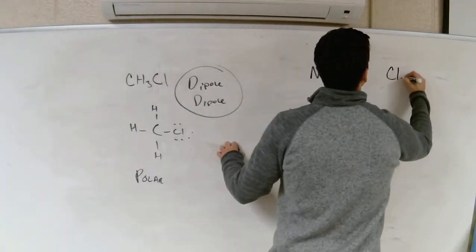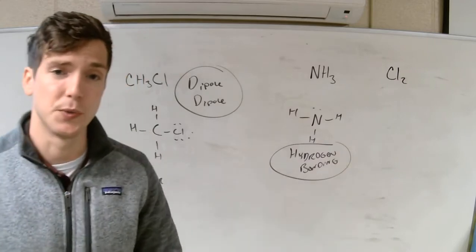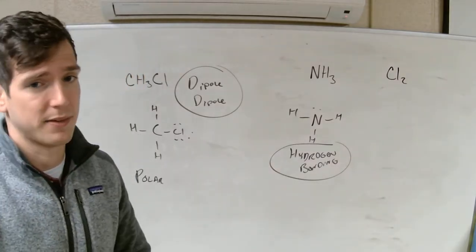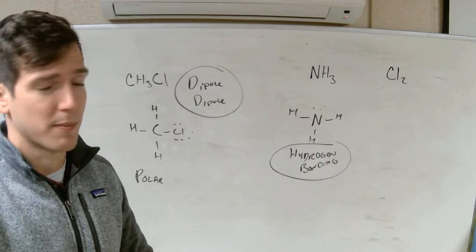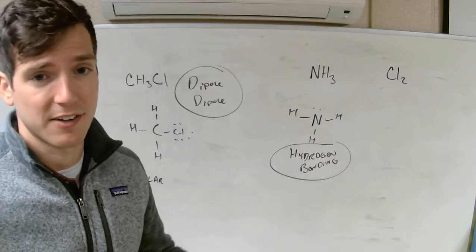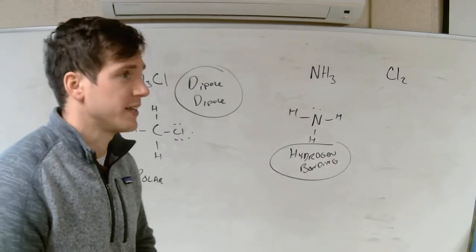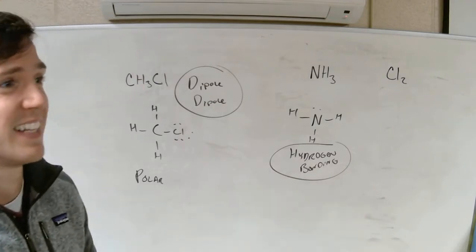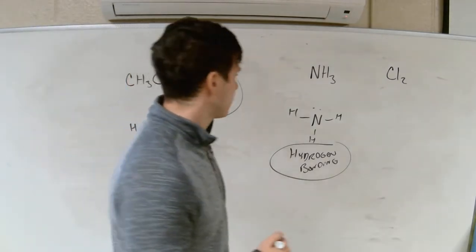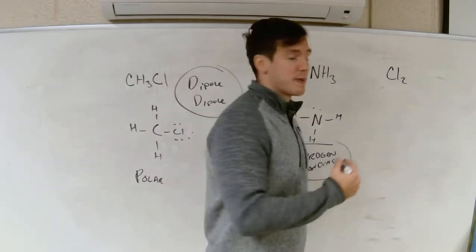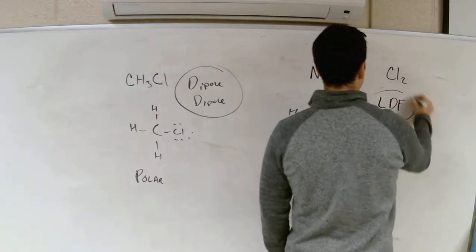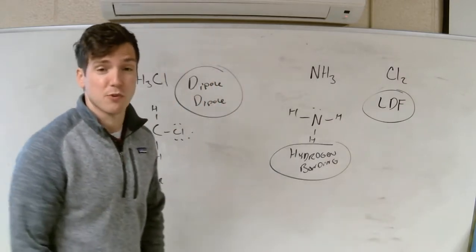Let's look at Cl2. Definitely not ionically bonded — it's two nonmetals. Definitely not hydrogen bonding — there's not even a hydrogen there. And it's not polar — Cl and Cl have the same amount of pull. So this is nonpolar, which makes it LDF — London dispersion forces. It's a nonpolar molecule and very weak.